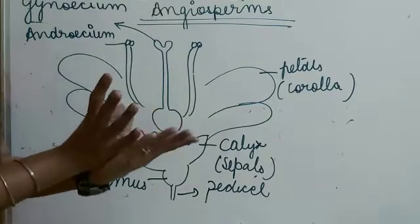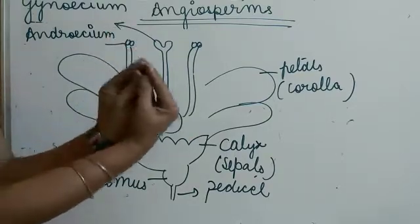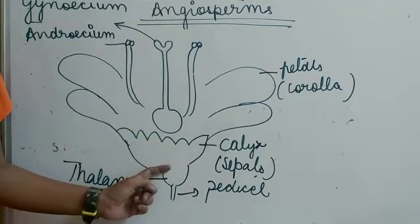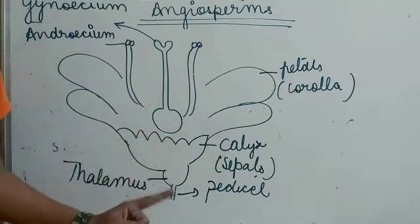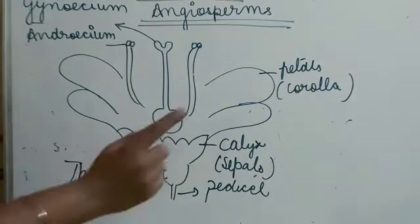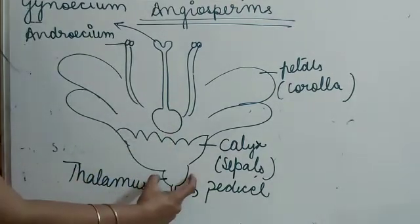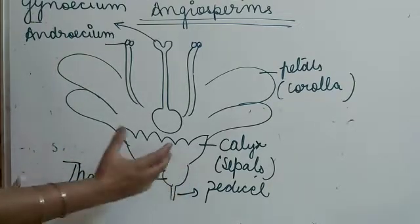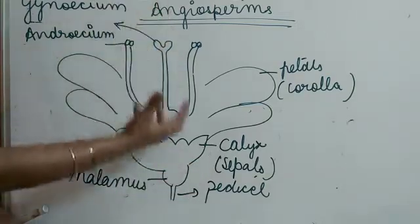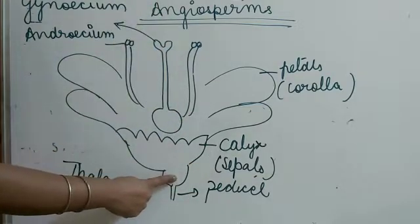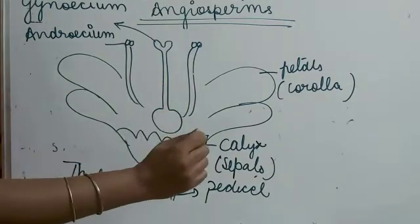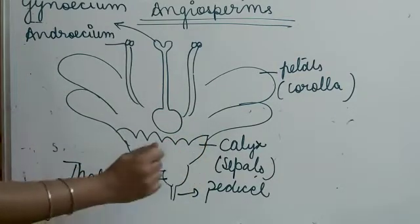The first function of the calyx is to support and protect the flower in bud condition. As the flower blooms, the calyx also performs photosynthesis due to its green color. The thalamus is the rounded structure that gives support to the whole flower. The pedicel is the stalk of the flower.